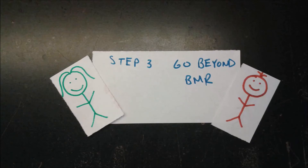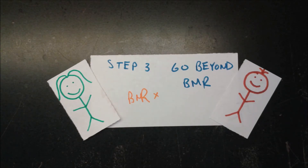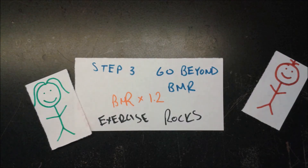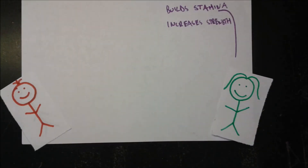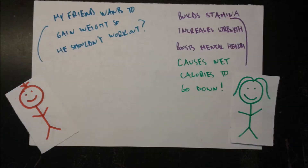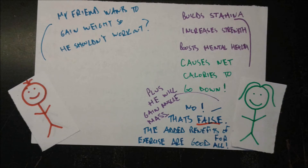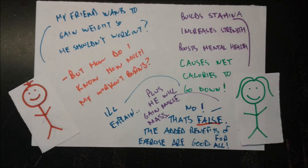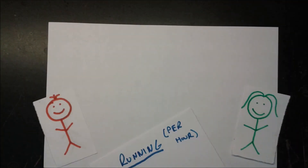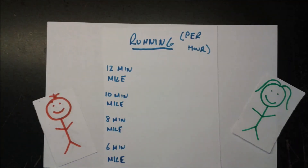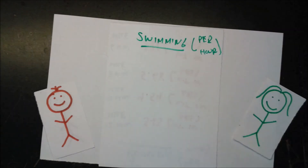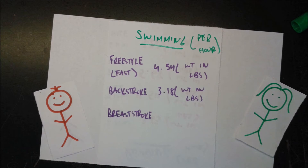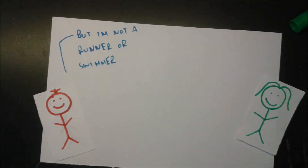Step three: go beyond BMR. Daily activities account for BMR times 1.2 calories burned, but exercise is a multi-purpose tool — it builds stamina, increases strength, boosts mental health, and reduces net calories. Even if you're trying to gain weight, keep exercising to build muscle mass and reap other benefits. Calories burned running depend on your weight, run time, and speed. For swimming, it depends on the type of stroke, with formulas based on your weight.